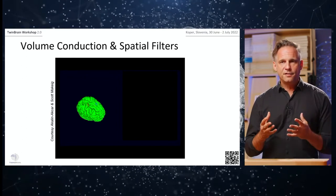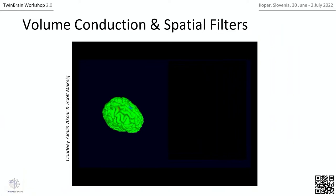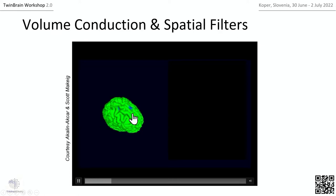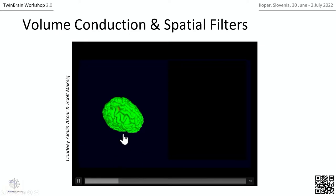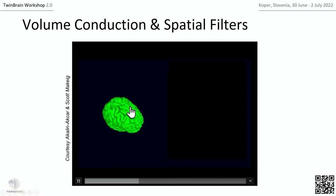Here is a simulation of volume conduction — a video produced by Zeynep Akalin Acar together with Scott. It shows a realistic head model with a forward model and two simulated sources: one in the right parietal cortex and one in the left motor cortex — two alpha oscillators with different frequencies, slowed down so we can observe what happens. This is the forward model — as if we knew ground truth of where in the brain what exactly happens.